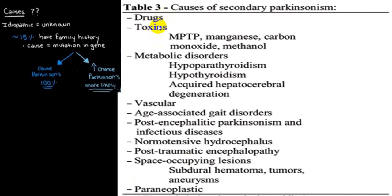Among metabolic disorders, hypoparathyroidism and hypothyroidism are most common. Vascular etiology includes age-associated, post-encephalitic, normal pressure hydrocephalus, post-traumatic, and occasionally space-occupying lesions like subdural hematoma, tumors, aneurysms, and paraneoplastic conditions. These are conditions which can end up with secondary Parkinsonism.